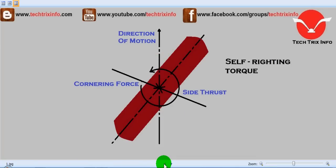But there is this particular tendency which brings back the wheels in the direction of motion. This torque which is resulting, shown over here, is called the self-righting torque.